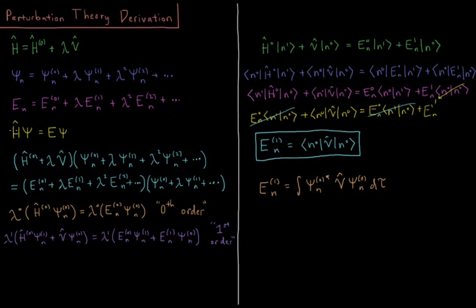So our total Hamiltonian and our total Schrodinger equation is H psi equals E psi. So substituting in the values of H, E, and psi into our Schrodinger equation, we have H0 plus lambda V times psi0 plus lambda psi1 plus lambda squared psi2, etc., equals E times psi E0 plus lambda E1 plus lambda squared E2, etc., times psi0 plus lambda psi1 plus lambda squared psi2, etc.